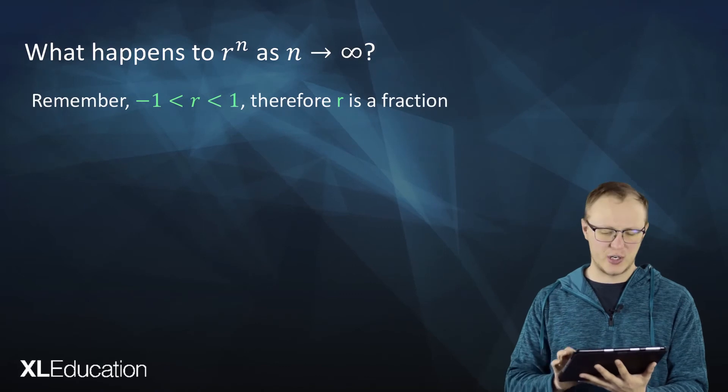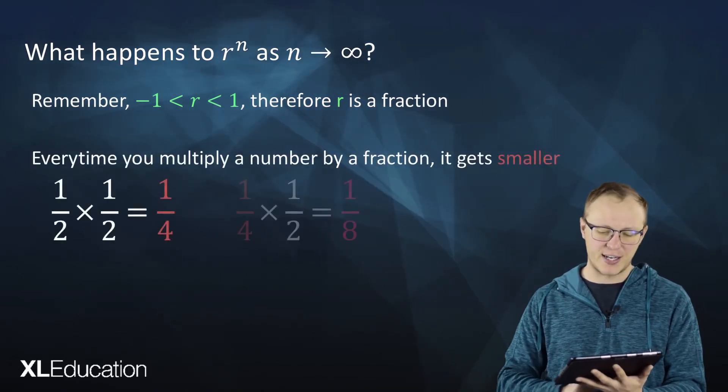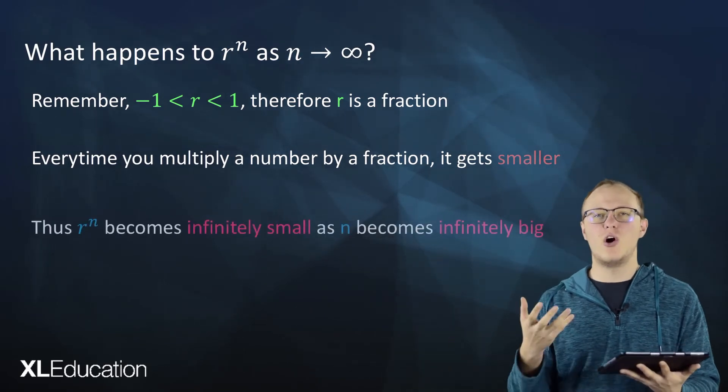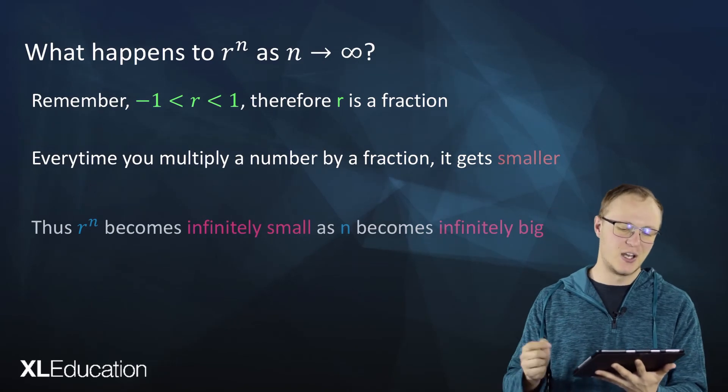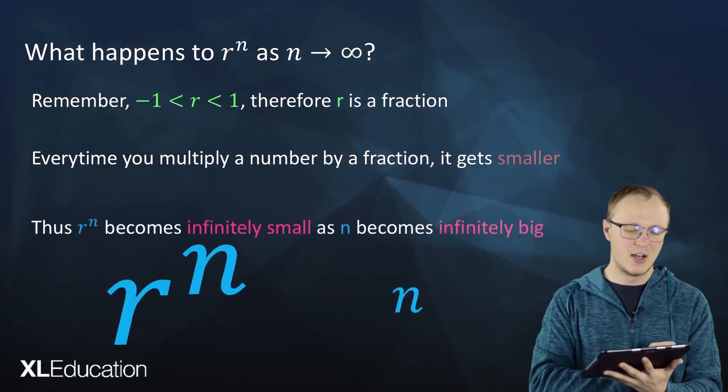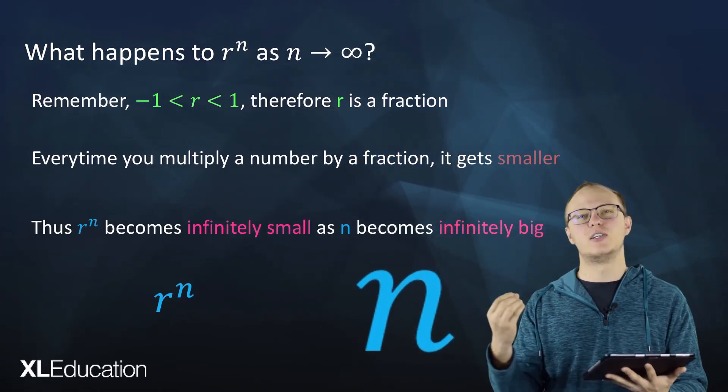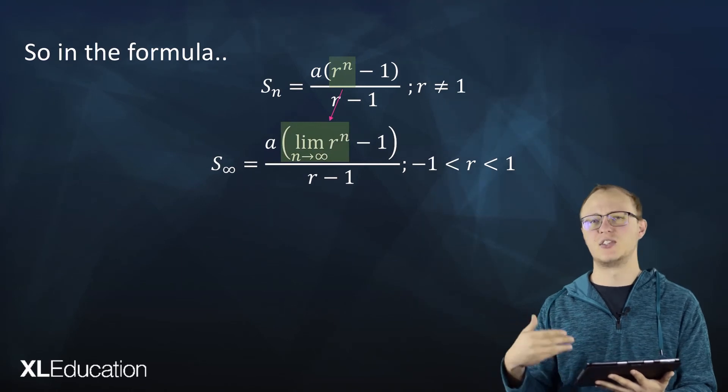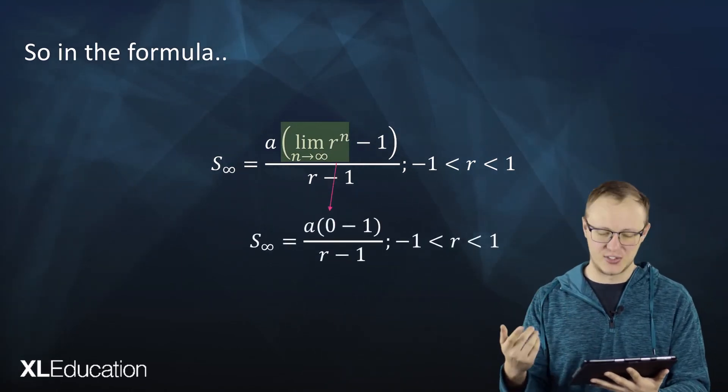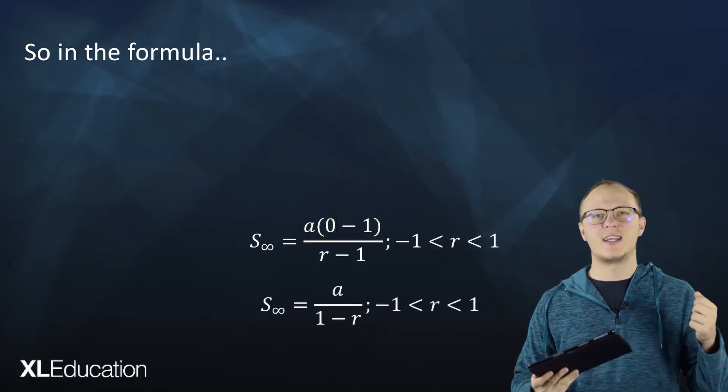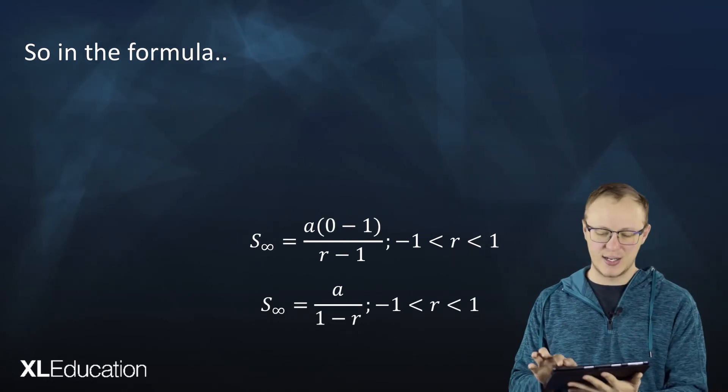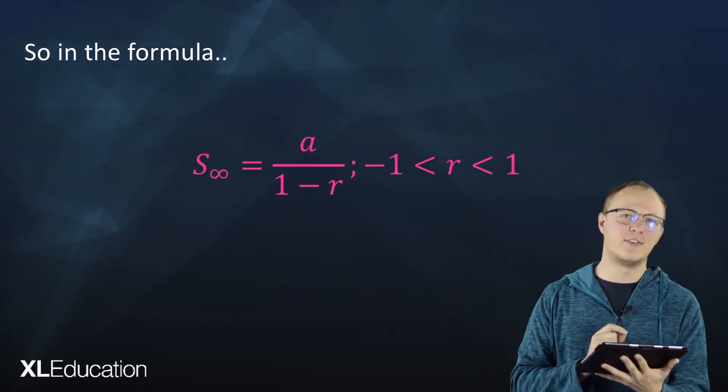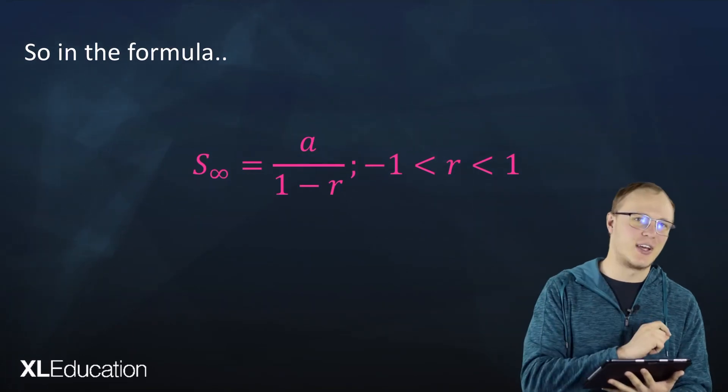Remember that r is a fraction. Every time you multiply a number by a fraction, it gets smaller. So if we take n to infinity, we are multiplying this fraction by itself infinitely many times. As n becomes infinitely big, r^n becomes infinitely small, and infinitely small we can just call zero. So in our formula, r^n becomes the limit as n tends to infinity of r^n, and that becomes zero. When we do a bit of algebra, we get that S infinity equals a divided by 1 minus r, where negative 1 is less than r is less than 1. That's the formula for an infinite geometric series given that it is convergent.